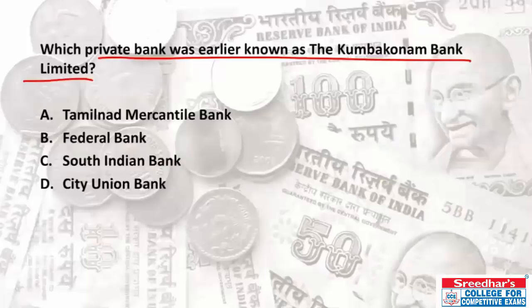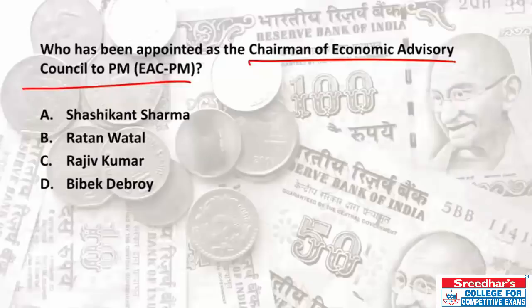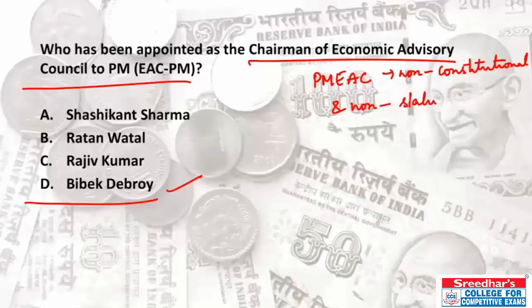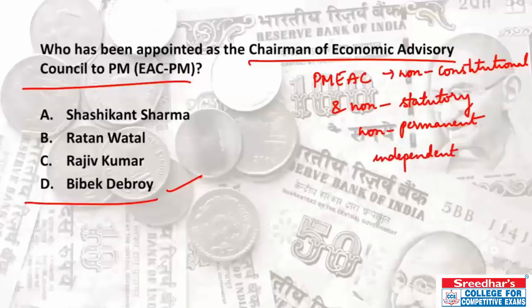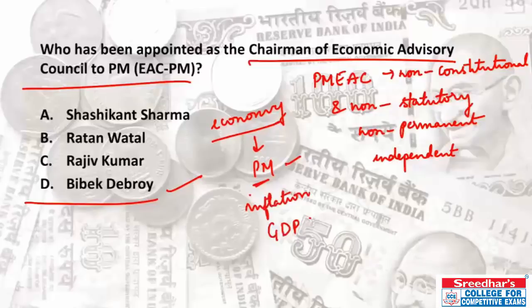The private bank earlier known as Kumbakonam Bank Limited is City Union Bank. Bibek Debroy has been appointed as chairman of the Economic Advisory Council to the Prime Minister (EAC-PM). The EAC-PM is a non-constitutional, non-statutory, non-permanent, and independent body constituted to analyze critical economic situations and advise the Prime Minister on economic matters such as inflation, GDP changes, and public finance.